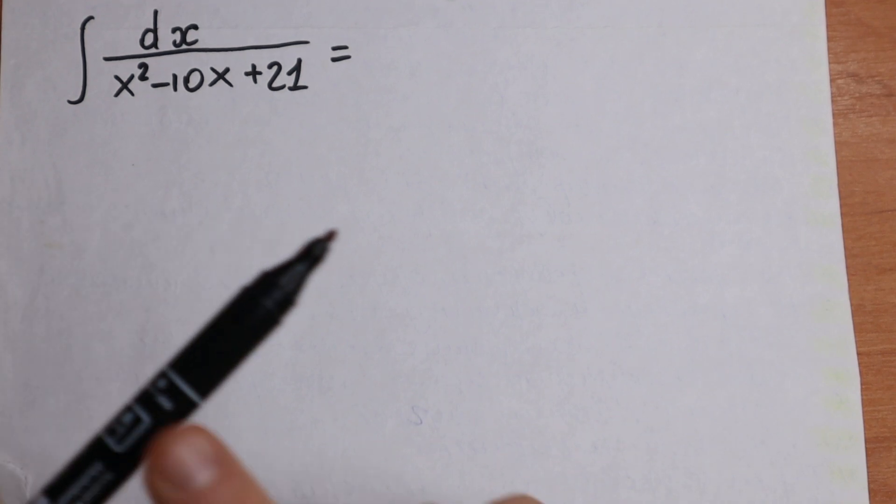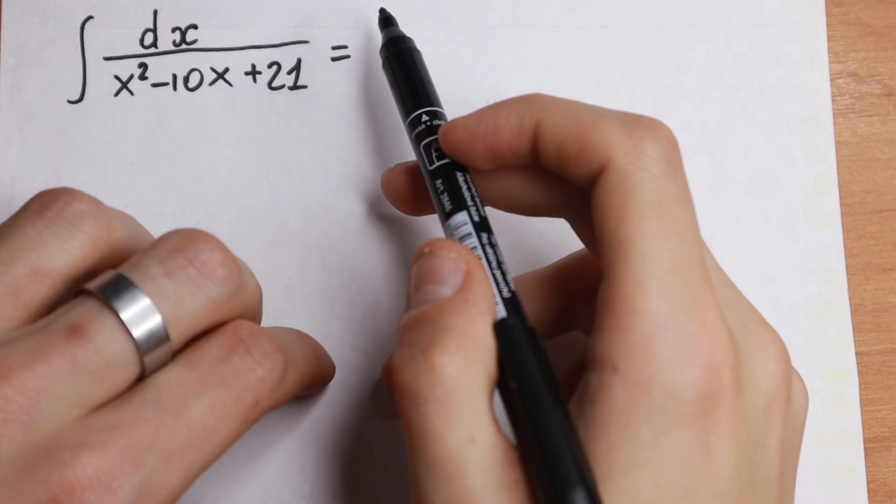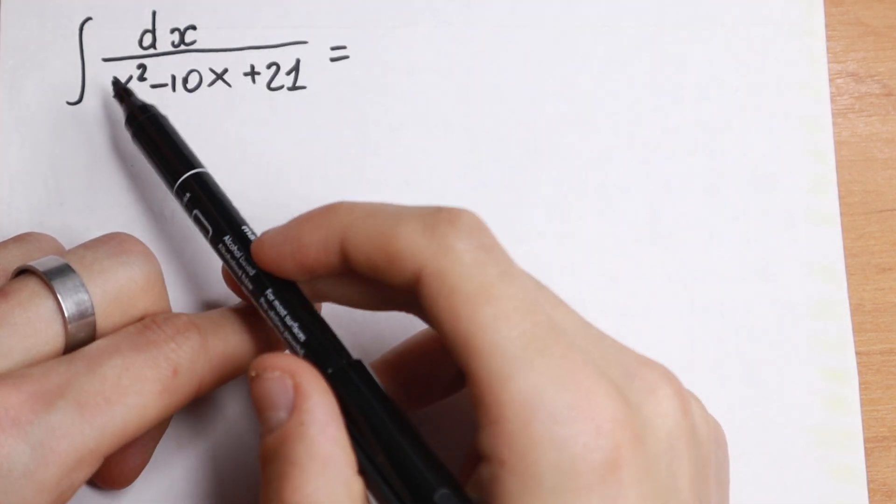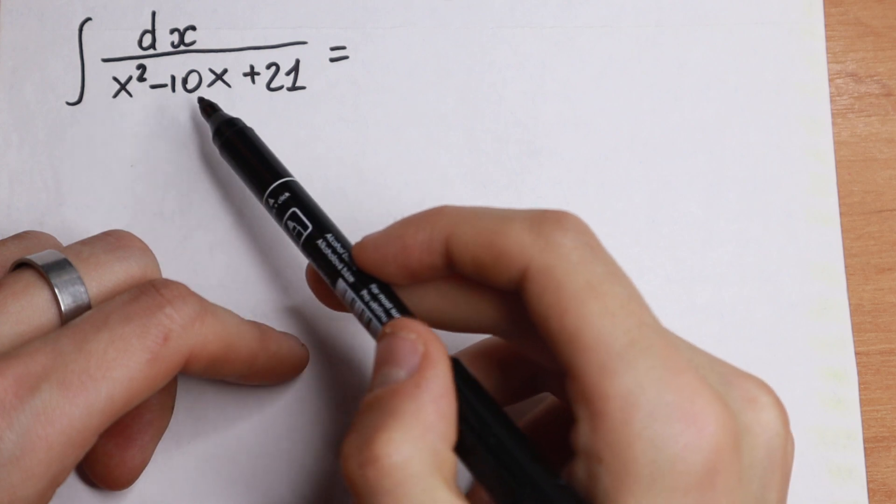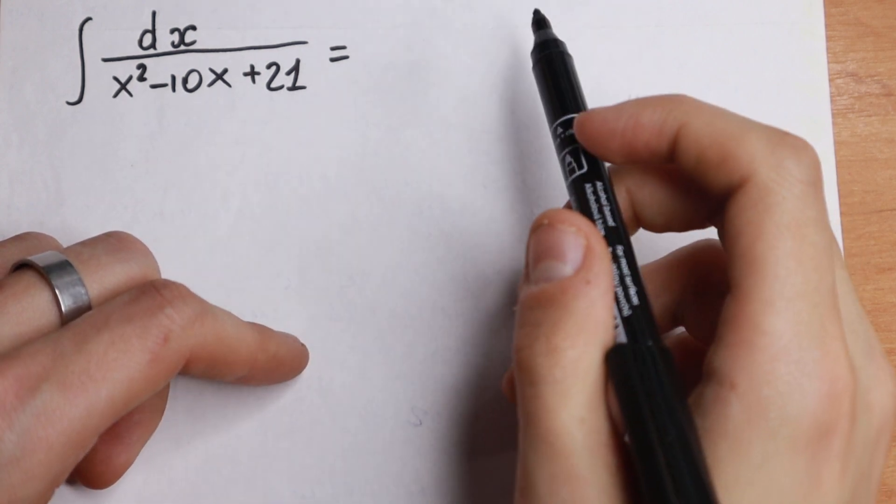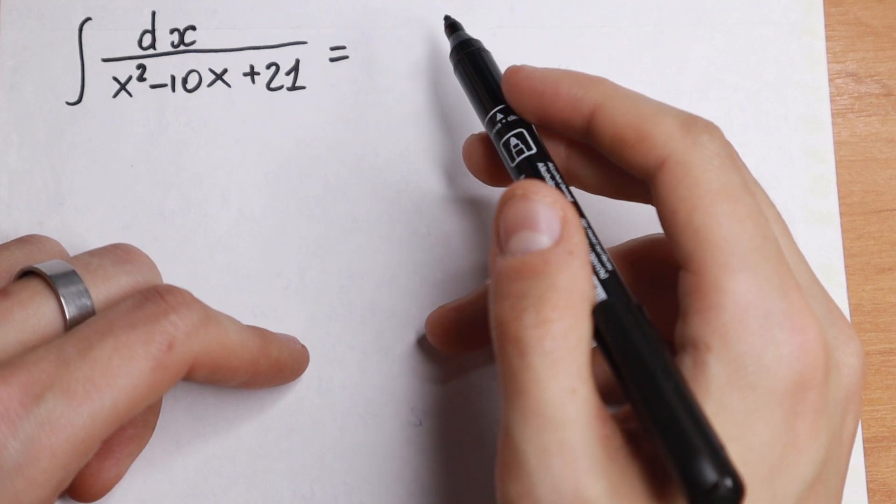Hello everyone! Welcome back to High Mathematics. Today we have an interesting integral. This is not our table case because we have a quadratic formula in our denominator: x squared minus 10x plus 21. This is not good for us because this is not our table case.